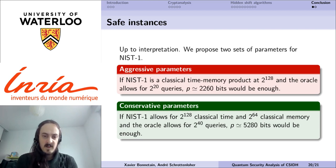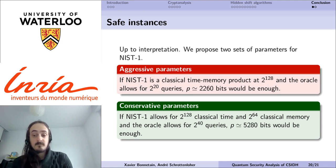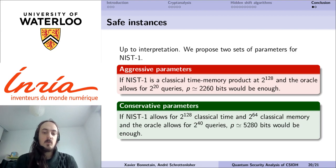We propose two sets of parameters for NIST level 1. The first one is an aggressive set of parameters. We consider that NIST level 1 means that we can have a classical time-memory product of 2 to the 128, and that the quantum oracle is such that we can afford 2 to the 20 queries, and in that case we would need a prime of roughly 2000 bits in order to avoid these attacks.